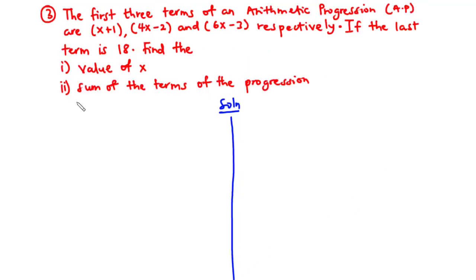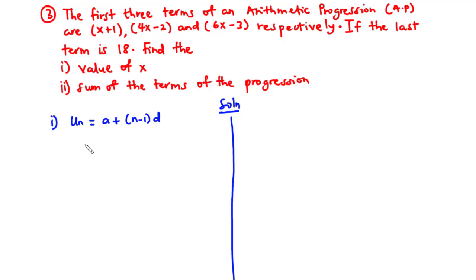The general nth term of an AP is given as u_n equals a plus (n minus 1) times d, where a is the first term, n is the number of terms, and d is the common difference. The first term u1 equals x plus 1, the second term u2 equals 4x minus 2, and the third term u3 equals 6x minus 3.